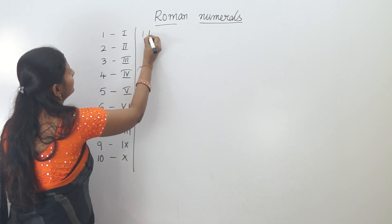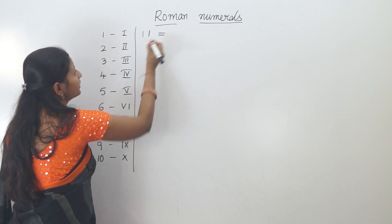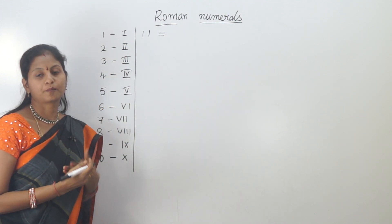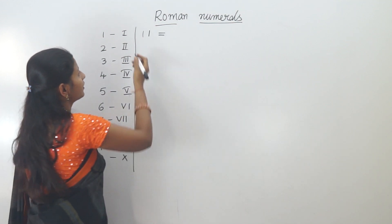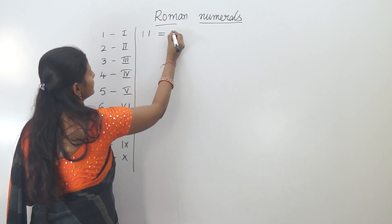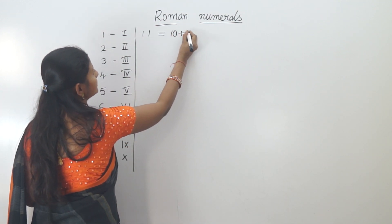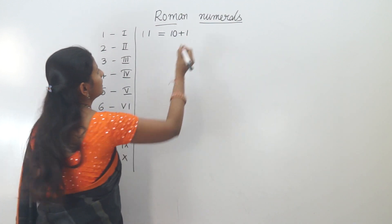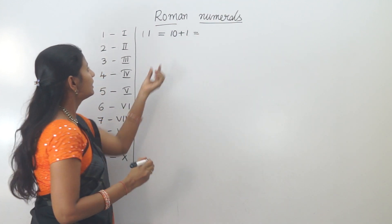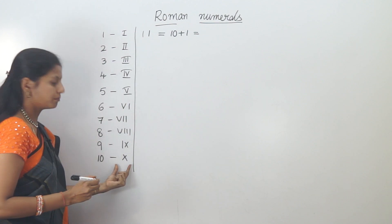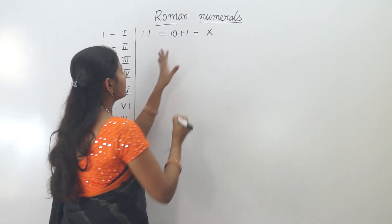We will start after 11. First, we will expand the numbers — we will break the numbers and write them in expanded form.